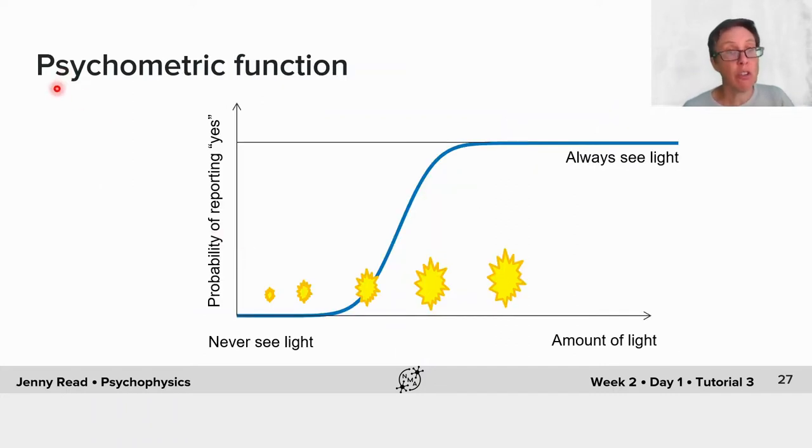You could construct a so-called psychometric function in which you plot the probability of reporting yes as a function of the amount of light. You might expect that for very little amounts of light, they wouldn't ever report seeing the light, whereas with very bright flashes, they would always report seeing the light.